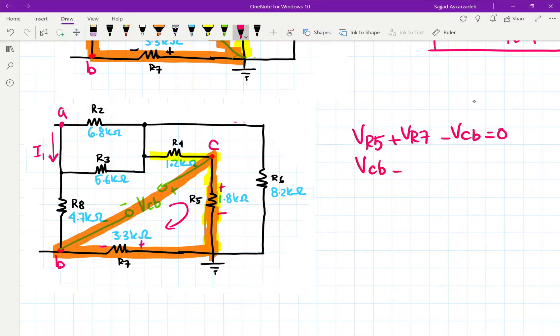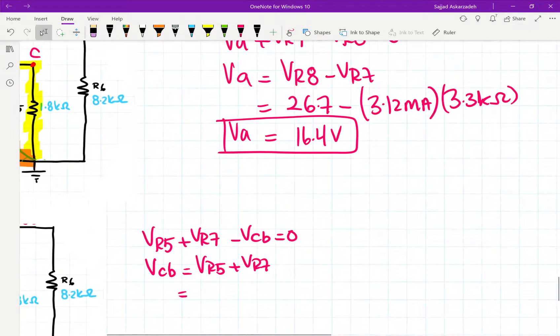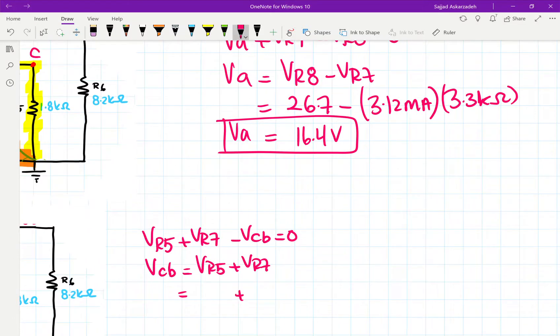We can say that VCB is equal to VR5 plus VR7. We already know what VR7 is based on this. So let's give some space for VR5. So it's 3.12 milliamps multiplied by 3.3.